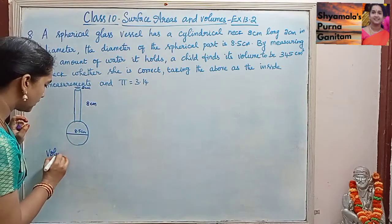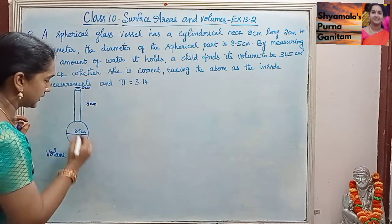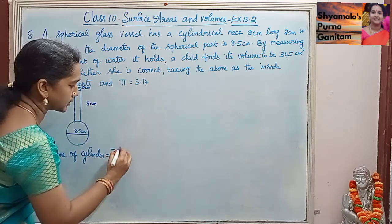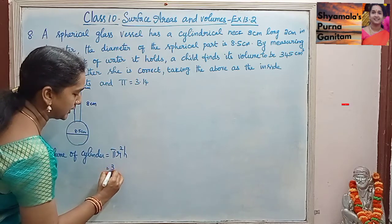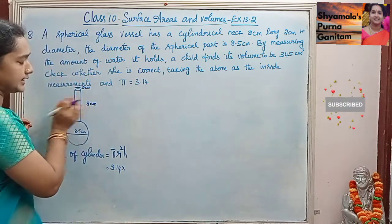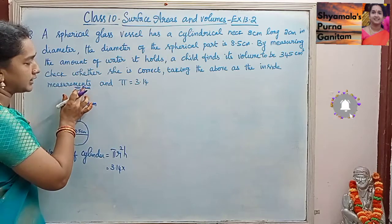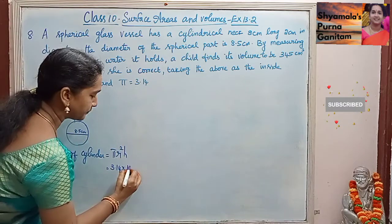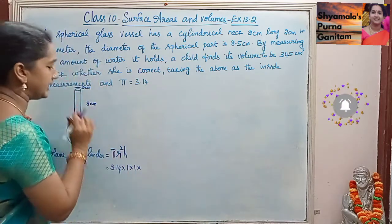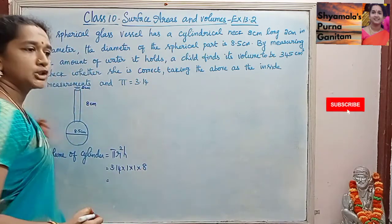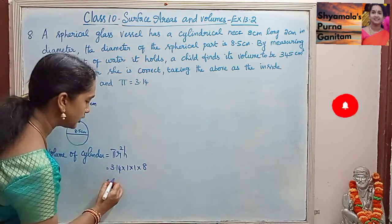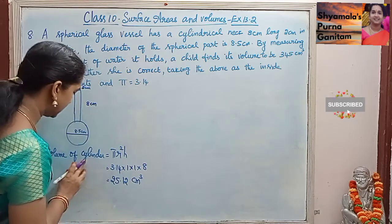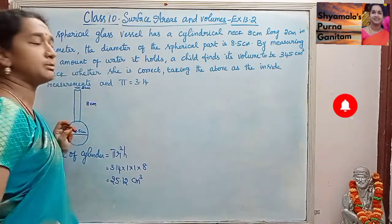First, volume of cylinder. Volume of cylinder is pi r squared h. So pi is 3.14, into radius squared, into height. The diameter is given as 2, so the radius is 2 by 2, that is 1. So 1 into 1, and the height is 8. When we multiply this we get 25.12 cm cube.